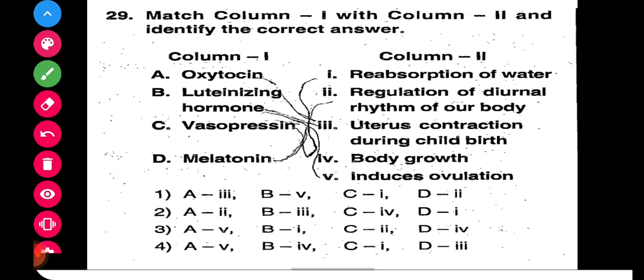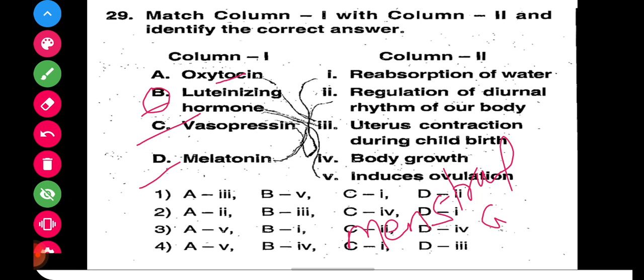Question 29: Match the column. Column one has oxytocin, luteinizing hormone, vasopressin, and melatonin. We know that LH (luteinizing hormone) is an important hormone involved in the menstrual cycle of the female. LH hormone is responsible for ovulation. So let's match: B matches with the fifth option.